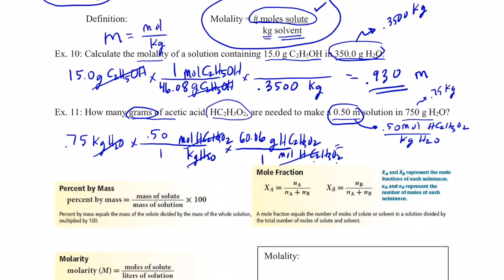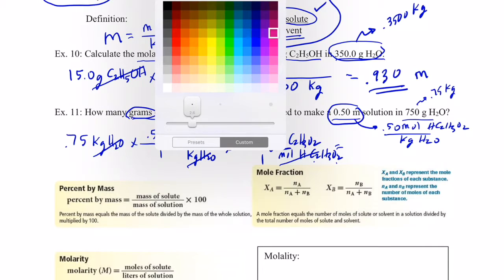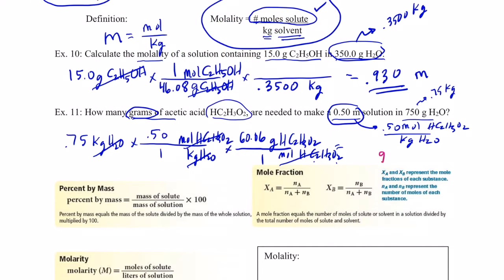Moles of acetic acid cancel and I'm in grams of acetic acid HC₂H₃O₂. So: 0.75 times 0.50 times 60.06 — with only two significant figures allowed — gives 22.52, which rounds to 23 grams of acetic acid in that solution.